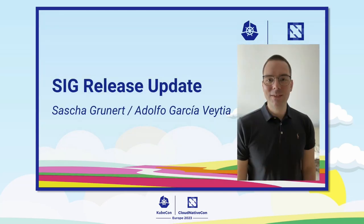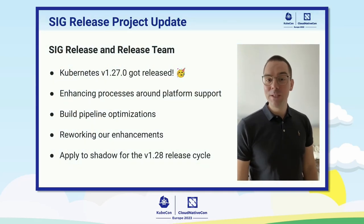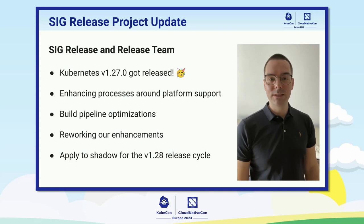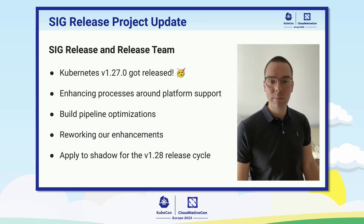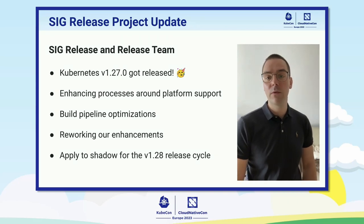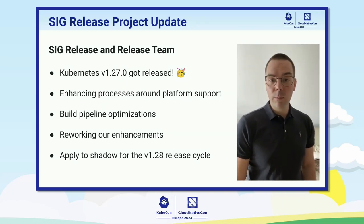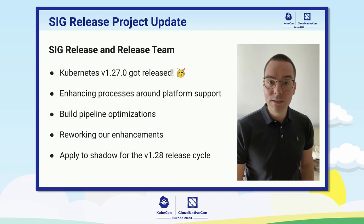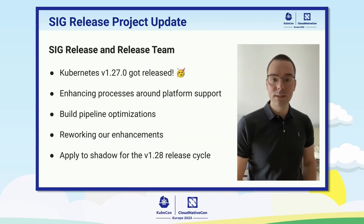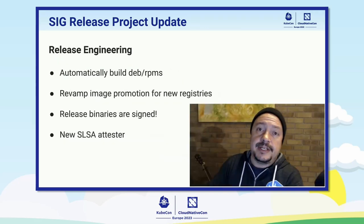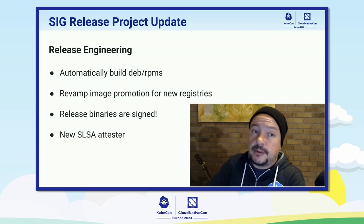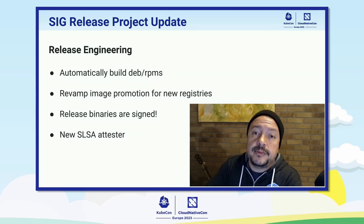Welcome everyone to our SIG Release project update for KubeCon EU. We finally released Kubernetes 1.27, so a huge shout out to the whole release team and everyone who was involved in this process. We also enhanced our processes around platform support, optimized our build pipelines, and reworked the enhancements as part of our roadmap and vision. You should also apply to the upcoming 1.28 release cycle as a shadow. This was a challenging year for the release engineering team. We did our part to help with the registry migration, from blog posts to adapting the processes to the new community infra.